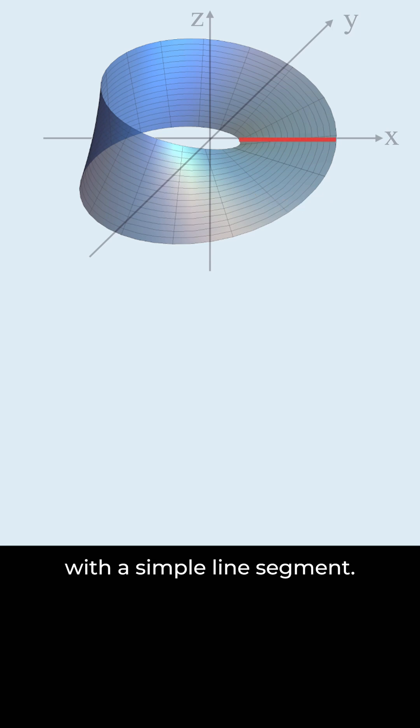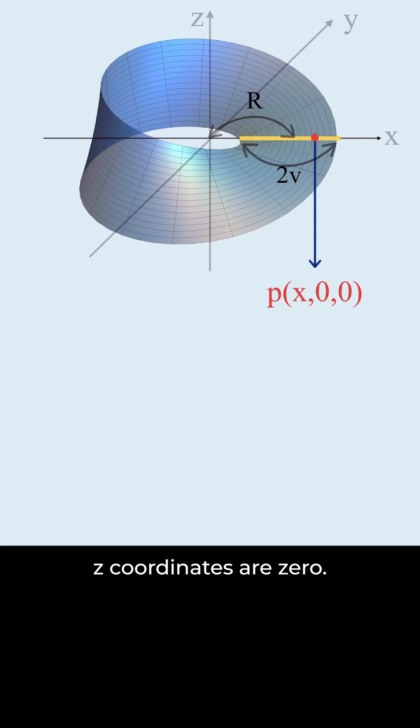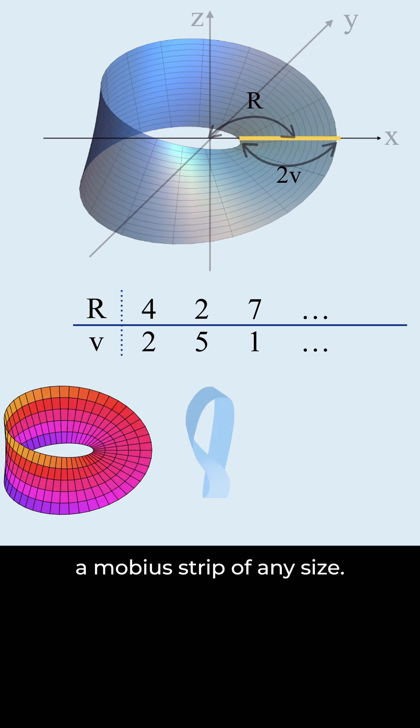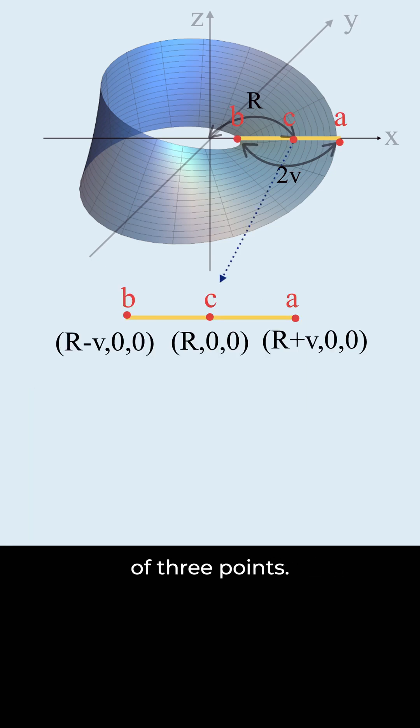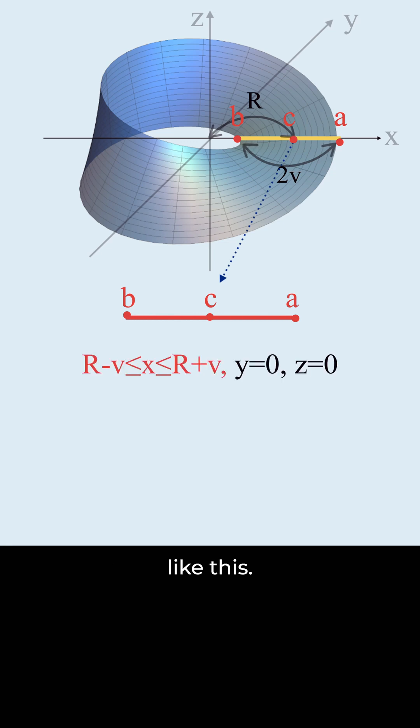Let's start with a simple line segment. This line lies along the x-axis, meaning all its y and z coordinates are zero. By adjusting R and v, we can create a Möbius strip of any size. Here are the coordinates of three points. This segment can be expressed like this.